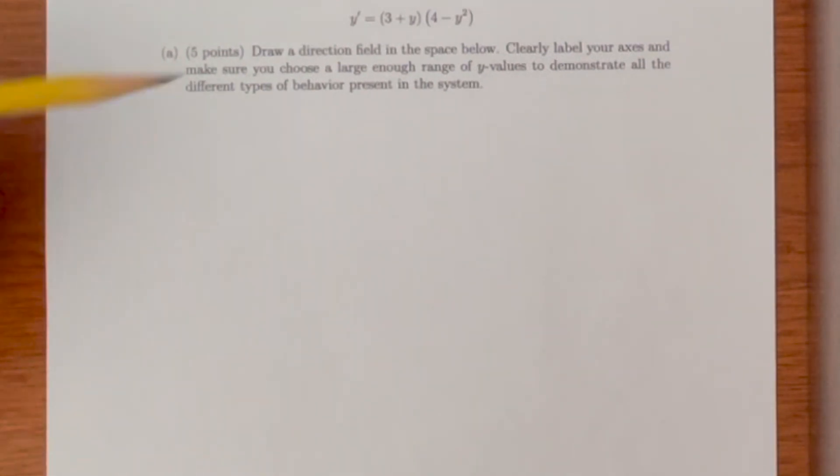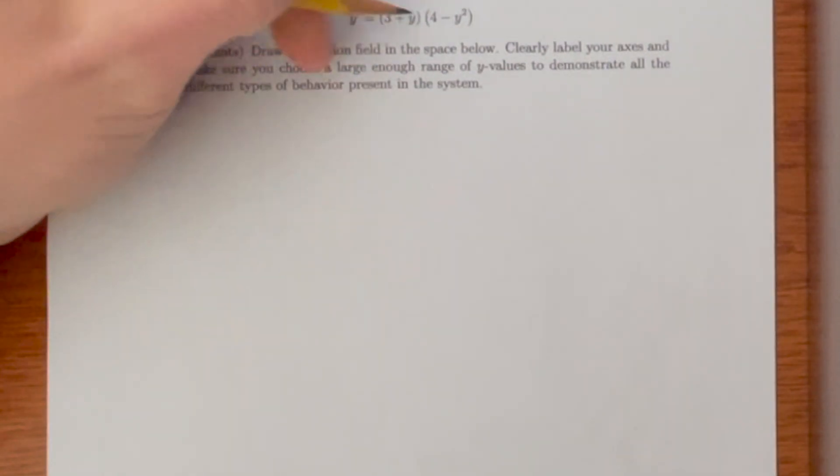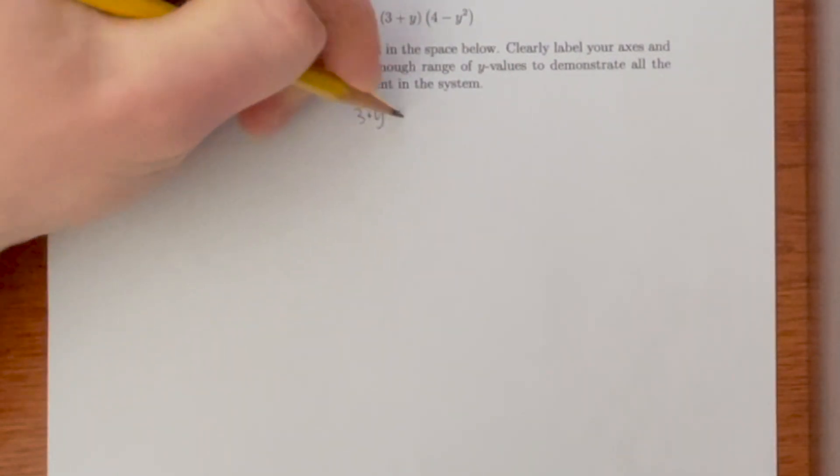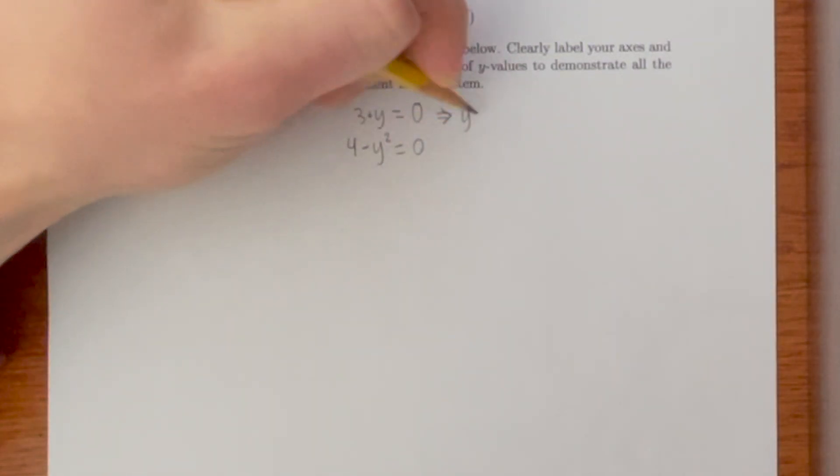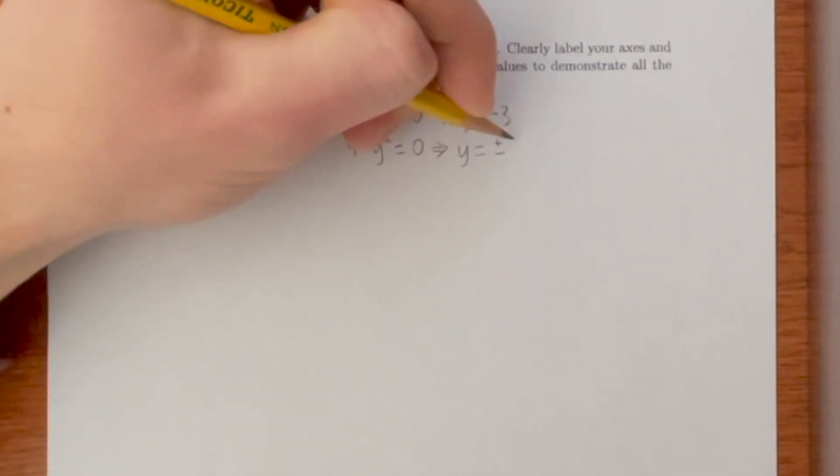The first thing to do is to find where y prime is equal to 0. y prime will be equal to 0 when 3 plus y equals 0 and when 4 minus y squared is equal to 0. This means when y is equal to negative 3 and when y is equal to plus or minus 2.